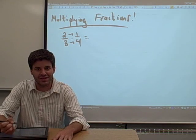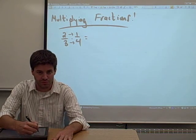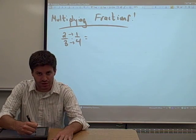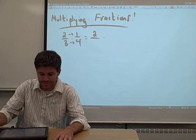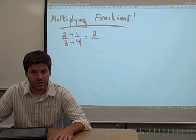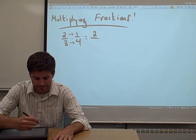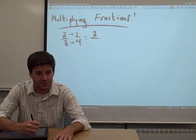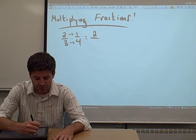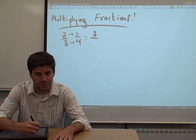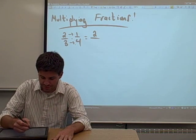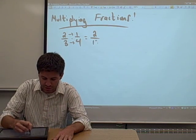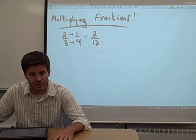What that means is you take the two numerators — two times one — multiply them together, you get two. That's your new numerator. You take the two denominators, three and four, multiply those two together. Three times four is twelve. That's your new denominator.